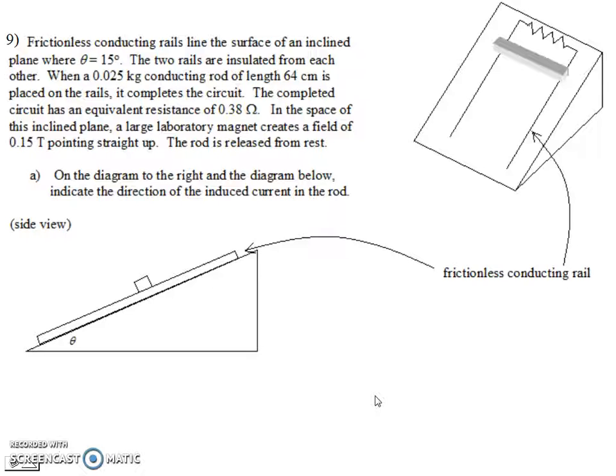So why is there going to be current in the rod? Well, we've got a moving conductor inside a magnetic field. And so first thing we want to do is let me sketch the magnetic field, which is pointing straight up. So in this picture, it's like this. In this picture, it's like this. I put it up to the side because eventually we're going to do a free-body diagram, and I don't want to mix and match and confuse the issue.